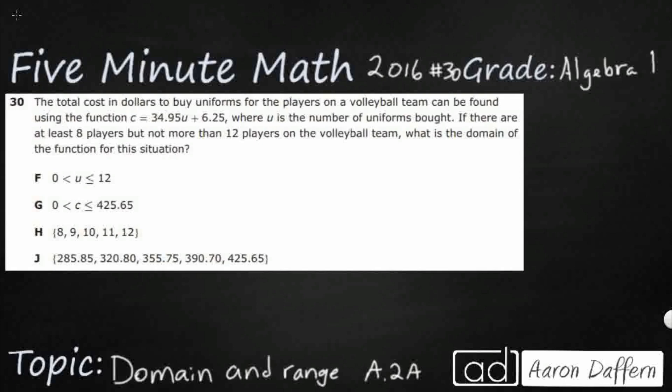So, we've got this real world problem here. We're looking to buy some uniforms. It looks like we've got $34.95 per uniform plus we've just got the standard fee of $6.25 that you pay one time and U is going to be our number of uniforms.